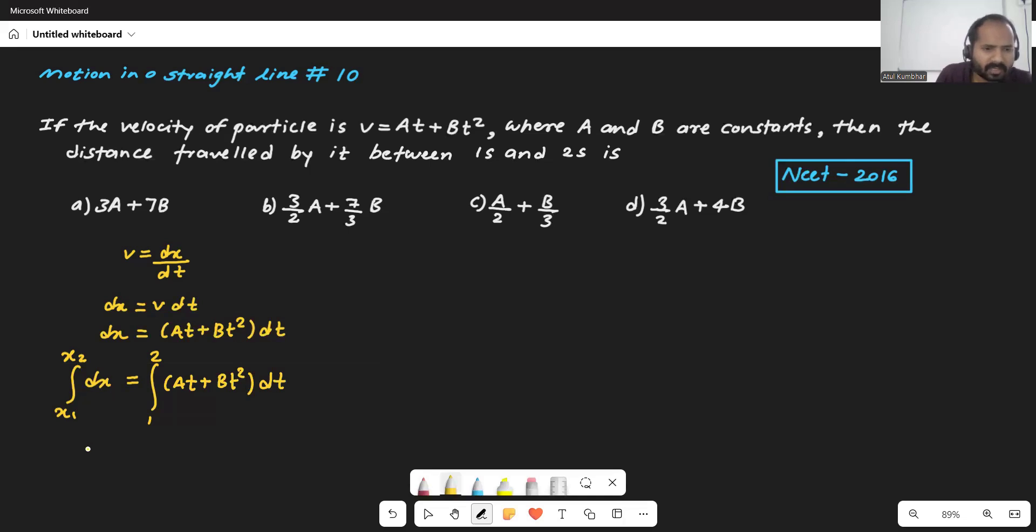So here it is At plus Bt² dt and we will resolve the integration. So integration of dx, that will be the x. Limit x₂ to x₁, x₁ to x₂ it is. Then for that, let's take separate integration for At and Bt². So as A is constant, that will be the integration of T dt.